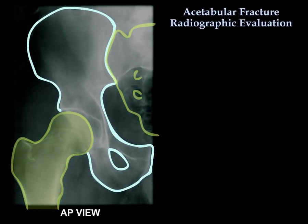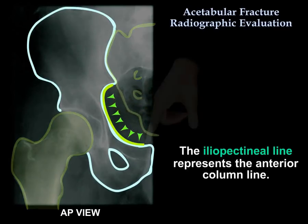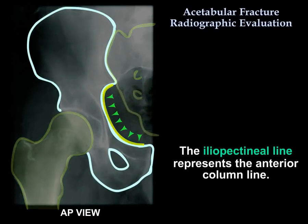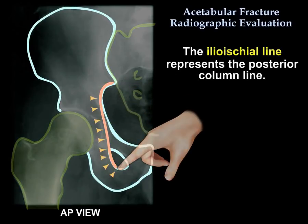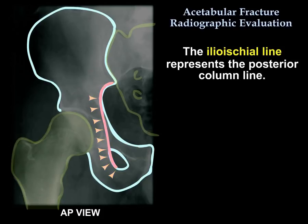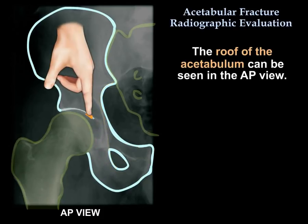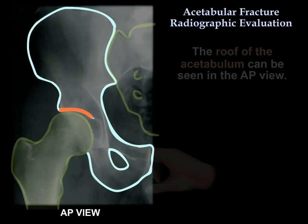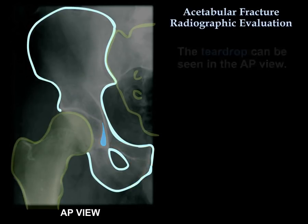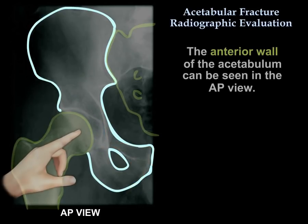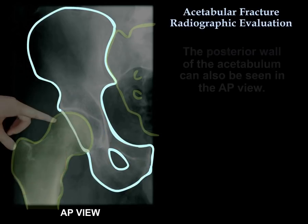The AP view will show us the iliopectineal line, which represents the anterior column, and the ilioischial line, which represents the posterior column. You can also see the roof of the acetabulum, the teardrop, the anterior wall, and the posterior wall.